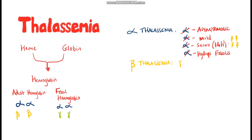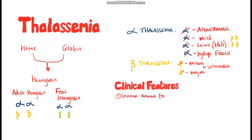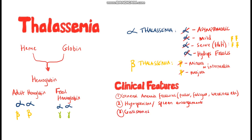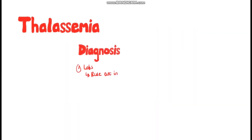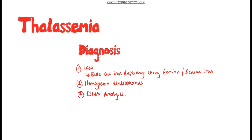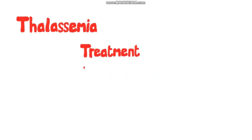In beta thalassemia, it's called minor if one of the two genes is affected and is mostly asymptomatic; major if both genes are affected; and intermediate if there is some residual function in one gene. Clinical features include the usual anemia symptoms, but thalassemia patients may also have hypersplenism, gallstones presenting as upper right quadrant pain, and skeletal changes such as chipmunk facies. Diagnosis involves labs and ruling out iron deficiency anemia with ferritin and iron levels, then hemoglobin electrophoresis, followed by DNA analysis. Treatment may include transfusions, iron chelation to reduce overload from repeated transfusions, and folic acid supplementation.